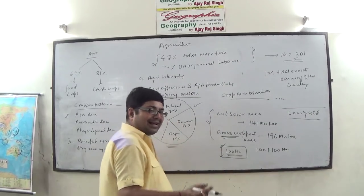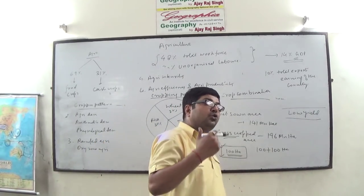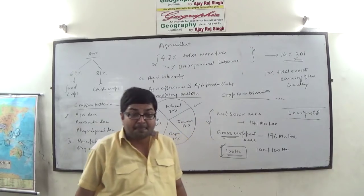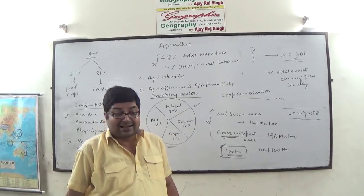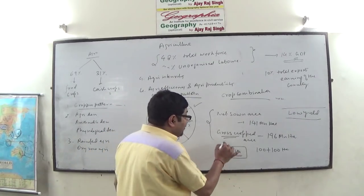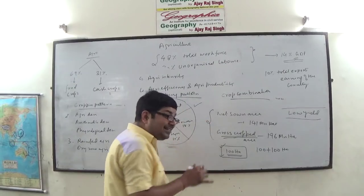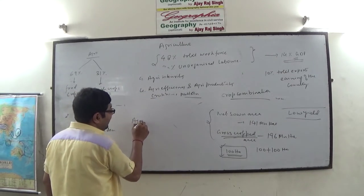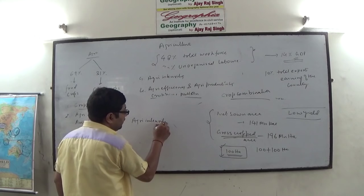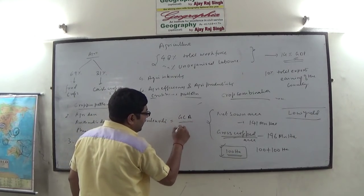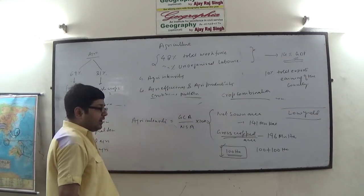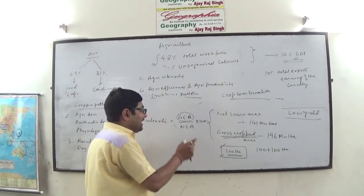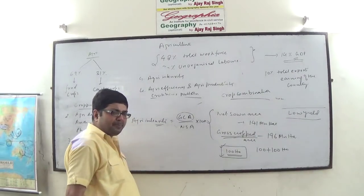In the same land, if the farmer harvests a first crop and also goes for a second or third crop, the gross crop area will be 200 or 300 hectares. Increasing the gross crop area increases the agricultural intensity. Agricultural intensity equals gross crop area divided by net sown area, multiplied by 100. If you go for a third crop, the gross crop area will be more and the agricultural intensity will be more.